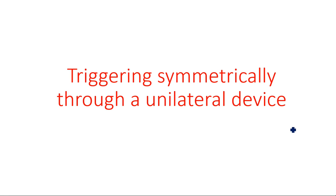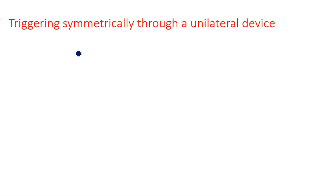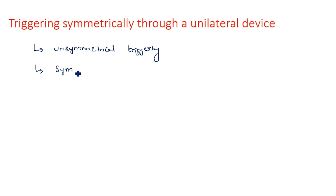In this video I am going to explain about triggering symmetrically through a unilateral device. In the last video I explained about the triggering methods. There are two types: unsymmetrical triggering and symmetrical triggering. These are the two methods available for making the bistable multivibrator change state from one state to another — that is called triggering.